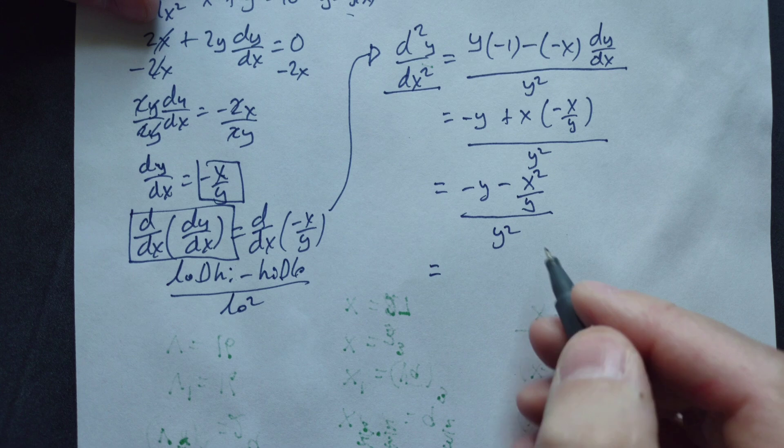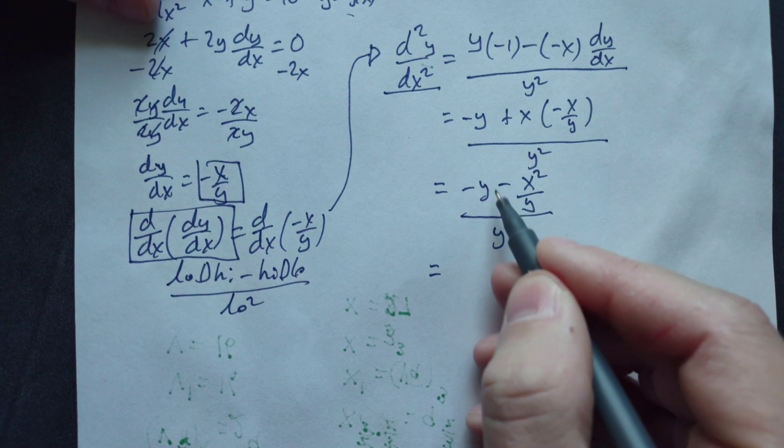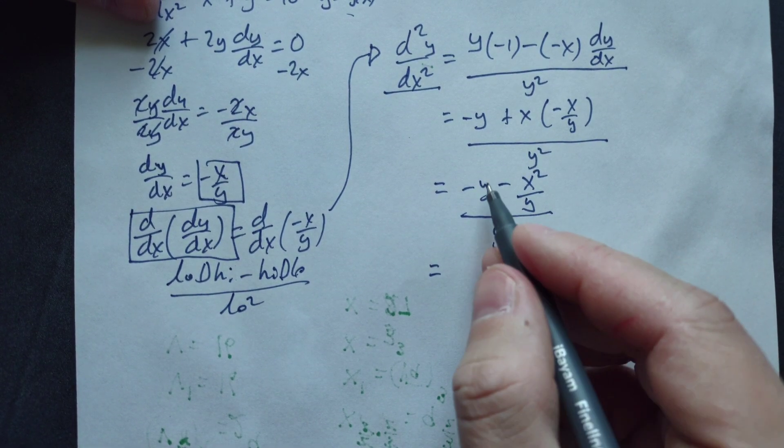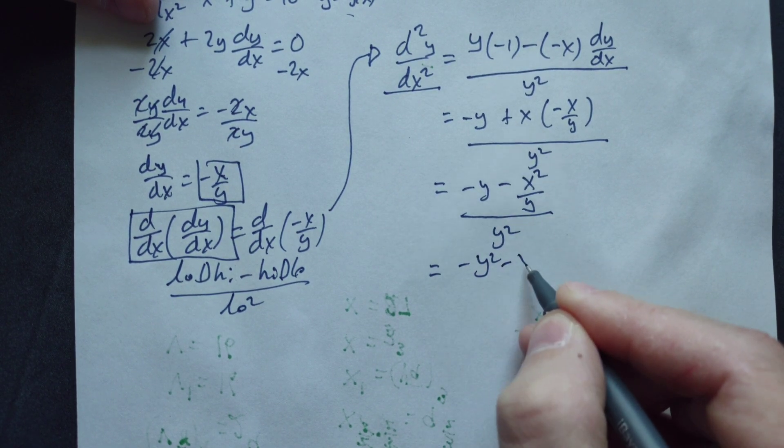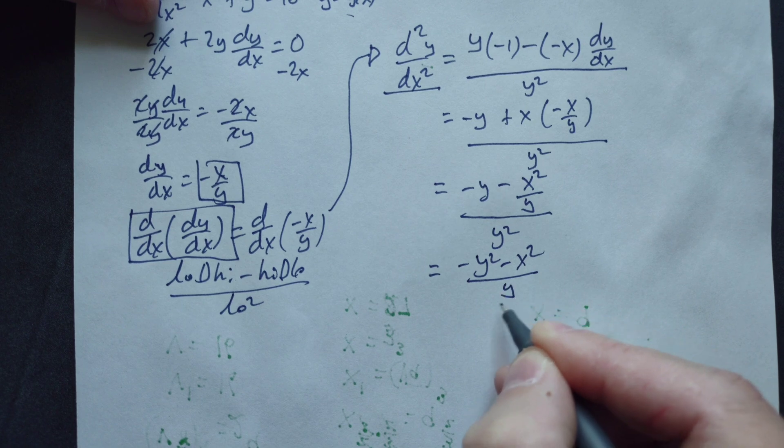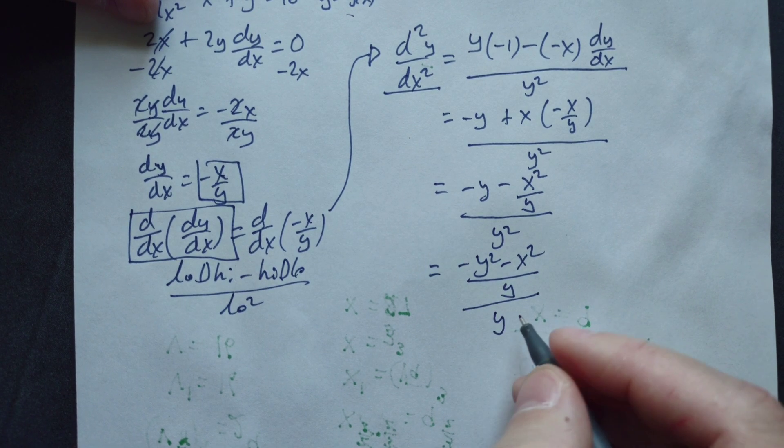Continue. Combine this into a single fraction in the numerator. Multiply the first y by y over y. It's going to be negative y squared minus x squared over y divided by y squared.